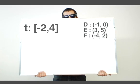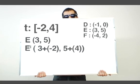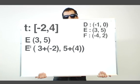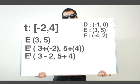To find E', we simply add the same translation to the E point. E equals (3, 5). Therefore, E' equals 3 plus -2, 5 plus 4. Therefore, the final E' point is (1, 9).